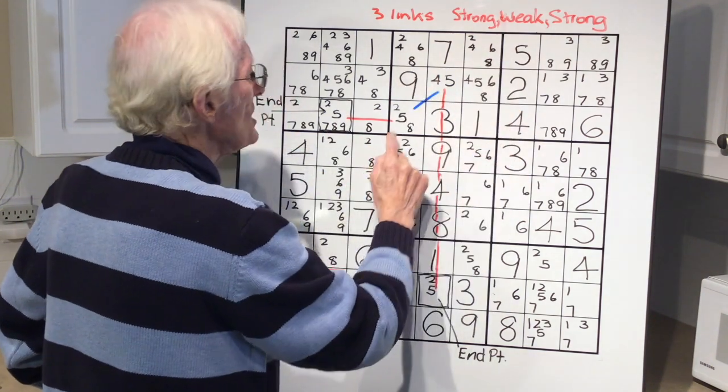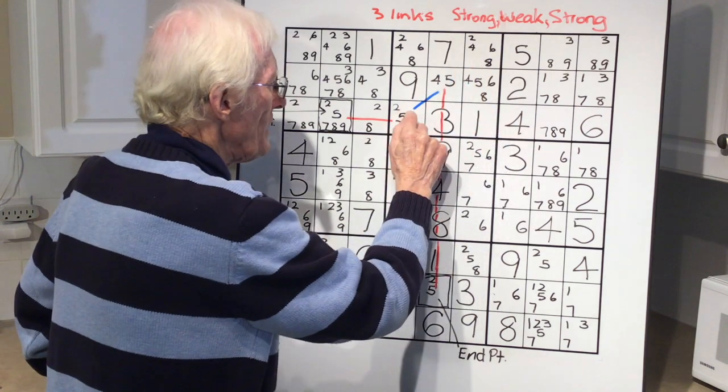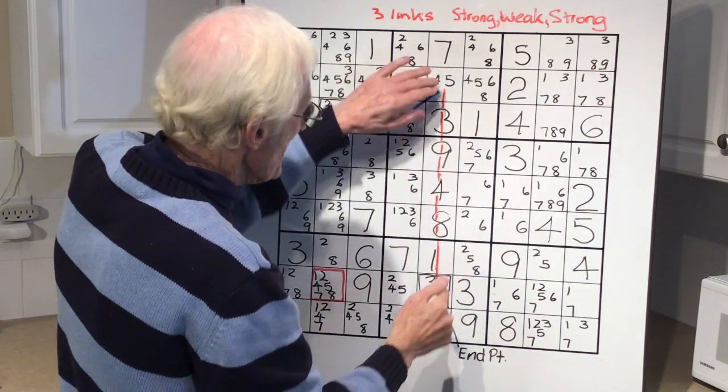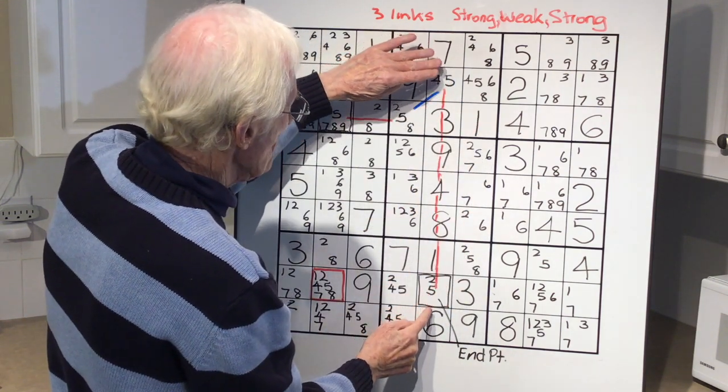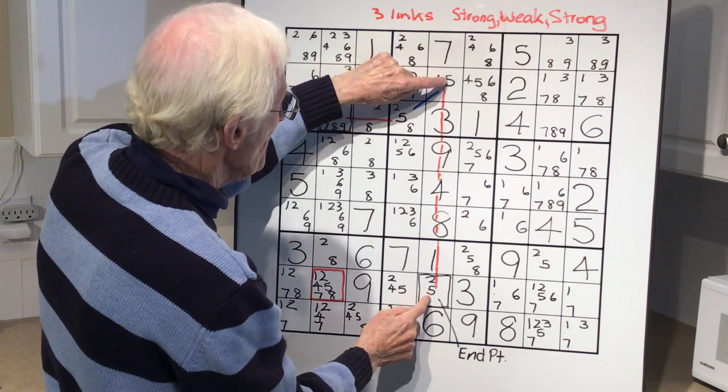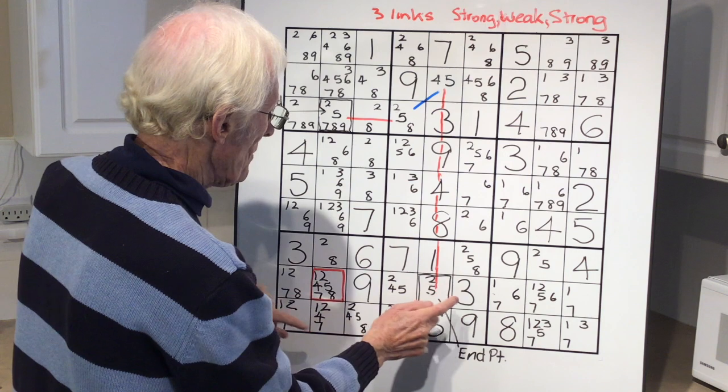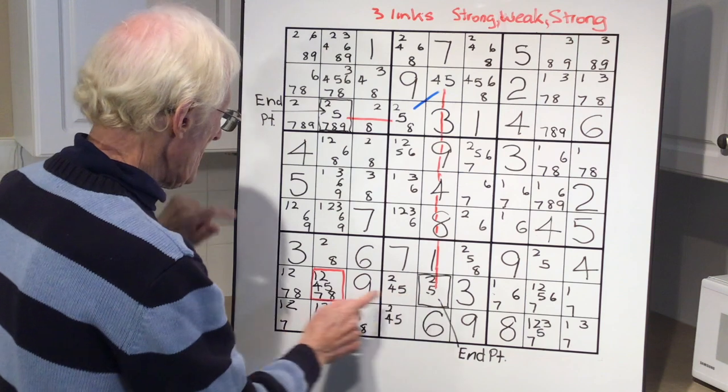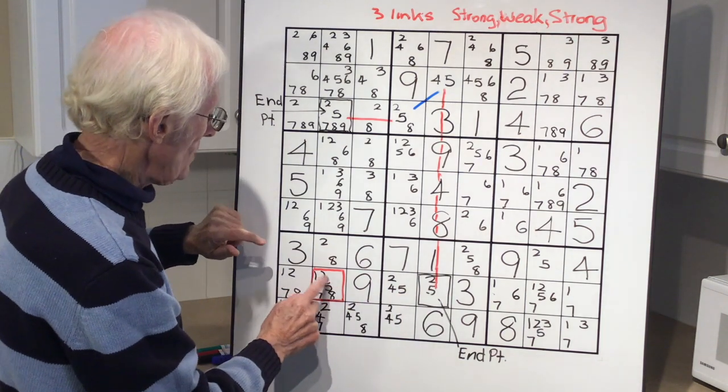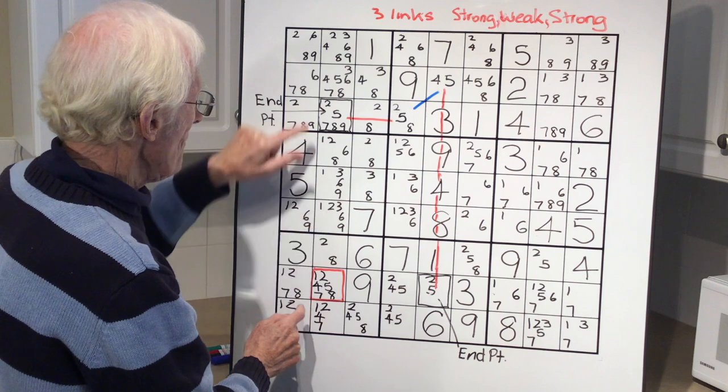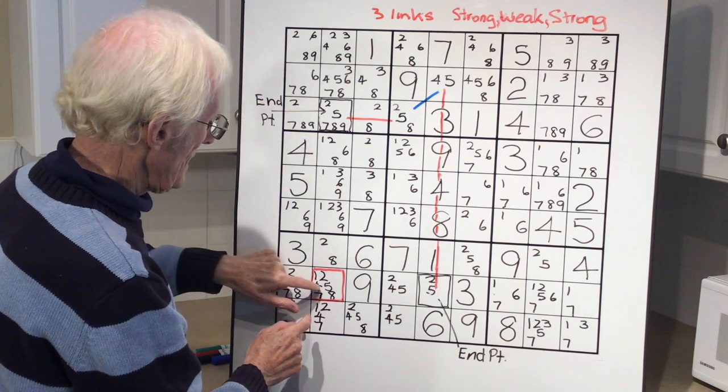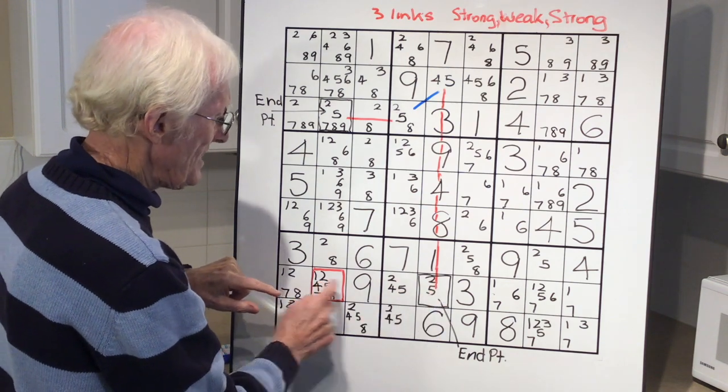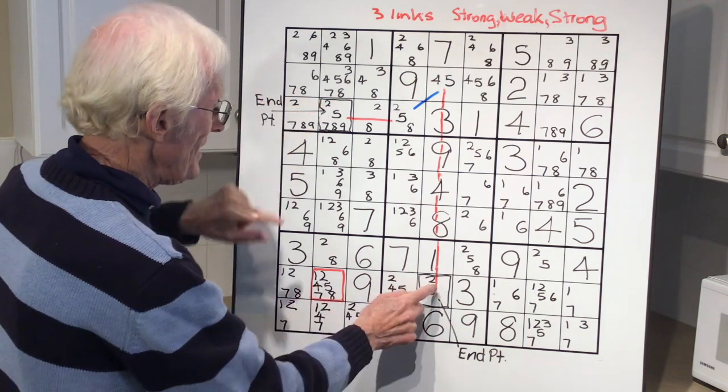And then we can come down, and now we can come down here for a strong link, because that's the only five, and that's the only five in that strong link. Once we've got that, we've now got the endpoint and an endpoint, and we look across here to this cell, and guess what? This cell has got a five in it. If that becomes a five, there cannot be a five. If that becomes a five, it still cannot be a five. It doesn't matter which way it goes, whether that's a five or that's a five, that five has to go because of the rule.